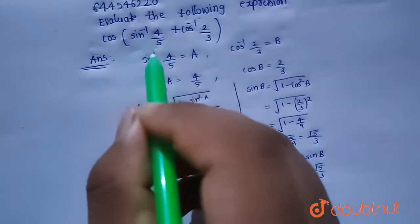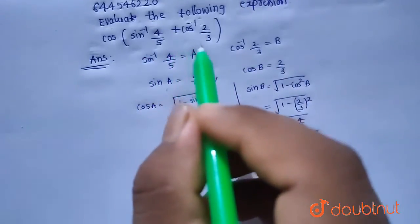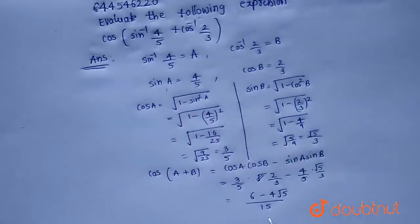So the value of the expression cos of sin inverse 4 by 5 plus cos inverse 2 by 3 will be equals to 6 minus 4 root 5 divided by 15.